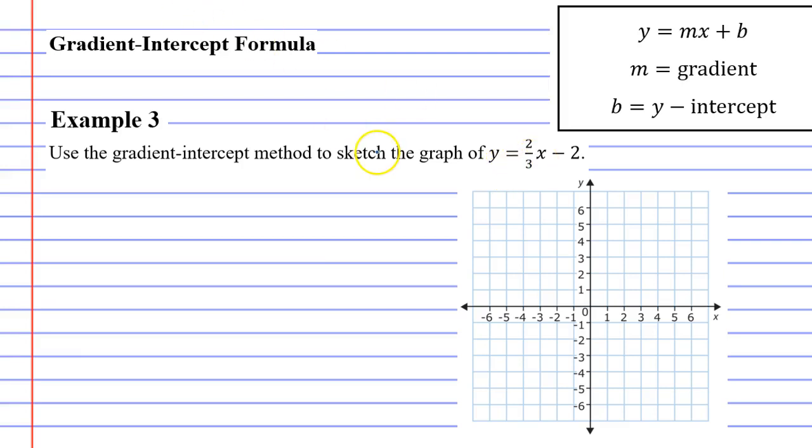Now for this one we can see what the y intercept is, that's the easy part as it always is. So b equals negative 2 which is the y intercept. So we'll label a point at the point negative 2, we know the graph is going to pass through that point.